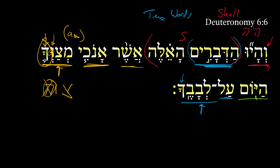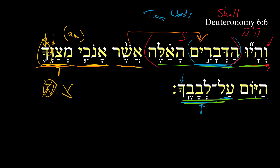So if we iron this out a little bit further, what we get is: 'and these things shall be upon your heart' — that is the main clause. And then the secondary, or relative clause, that further defines these things is 'which I am commanding you today.' So the full expansion would be: 'These things, which I am commanding you today, they shall be upon your heart.'